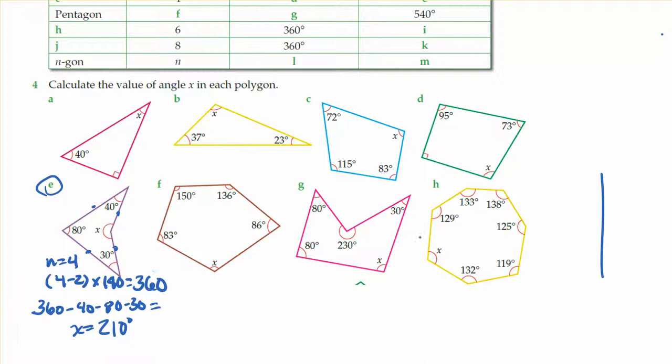And for some of these shapes, you might have a much bigger amount of angles depending on how many sides. So you can see this one is a 1, 2, 3, 4, 5, 6, 7-sided shape.